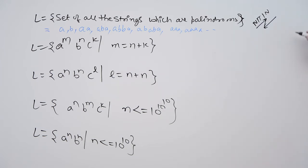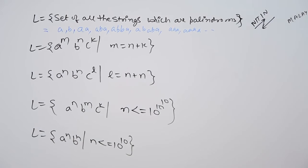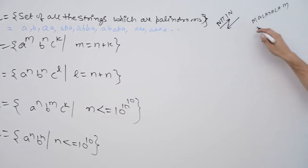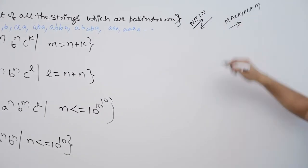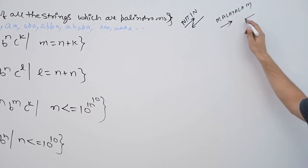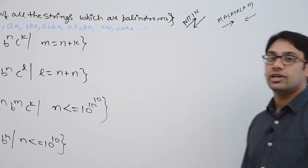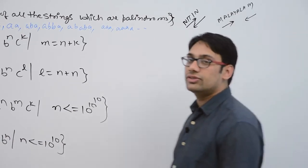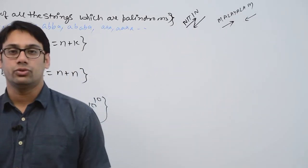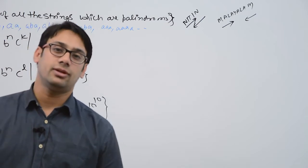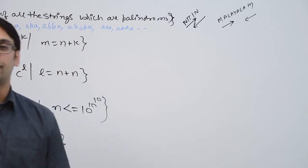In the same way, if you have words like 'Malayalam' — M, A, L, A, Y, A, L, A, M. If you read 'Malayalam' from this direction to that direction, or that direction to this direction, in both cases you are going to read the string the same. In both directions, 'Malayalam' is represented the same.